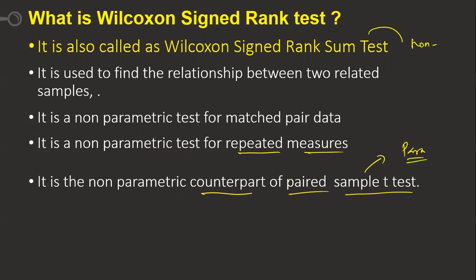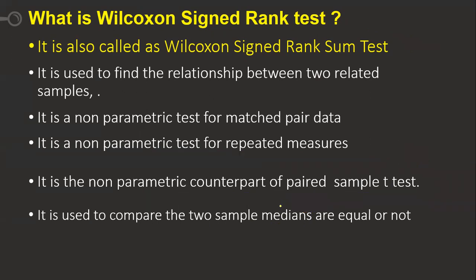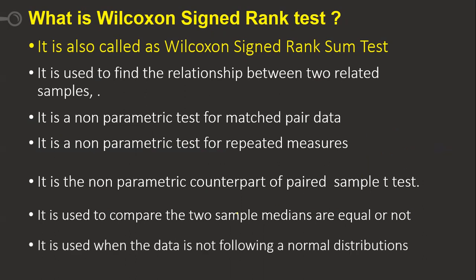In the Wilcoxon Rank Sum test (Mann-Whitney U), we compare means. Here, we compare two sample medians. The null hypothesis is that median one equals median two, i.e., median one minus median two equals zero — the difference between the medians is zero. It is used when the data does not follow a normal distribution, which is why it is called a non-parametric test.